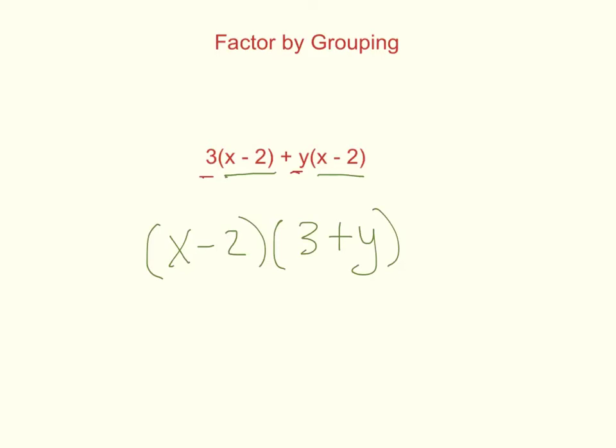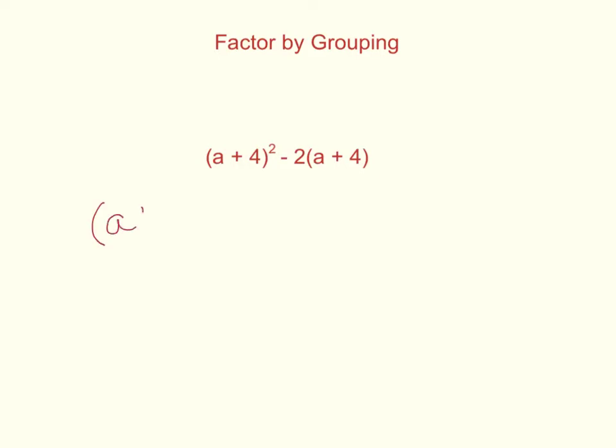Let's look at another example. In this example, we need to expand out the first term, because it's (a plus 4) squared. And we know when it says squared, it means write it twice. So we have (a plus 4) times (a plus 4). And then we keep the rest, minus 2(a plus 4).